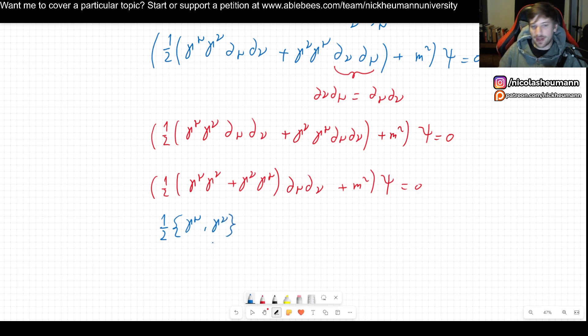This is the anticommutator of gamma mu gamma nu. So that was what this was all about. We were only always trying to get to this. And now, well, let me continue writing this.